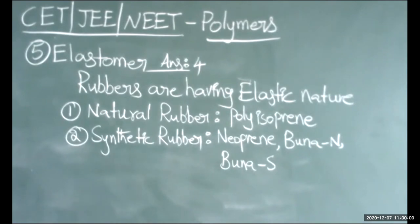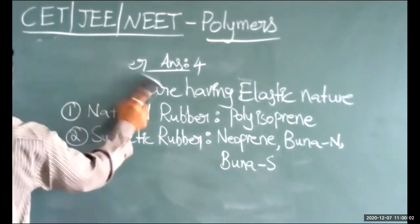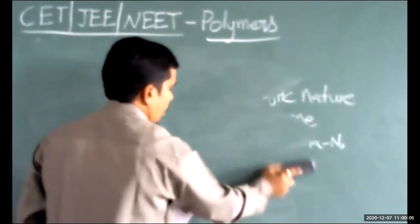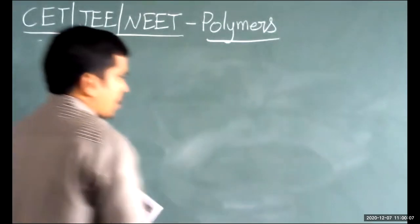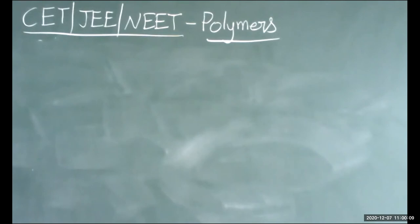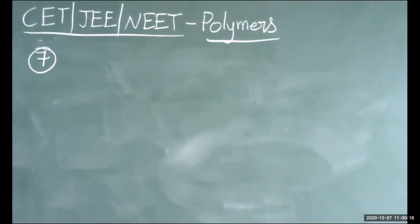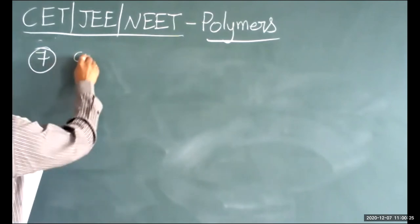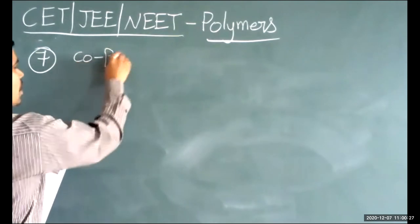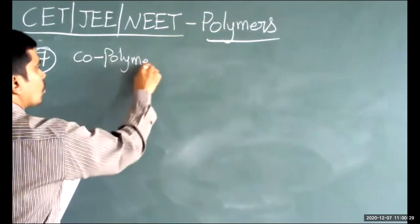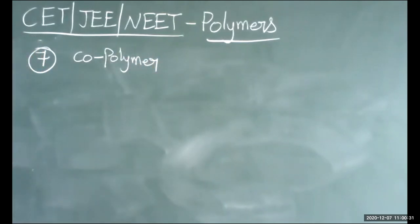Next, question number 7, page 141: which of the following is an example of a copolymer? A copolymer contains two different types of monomers.